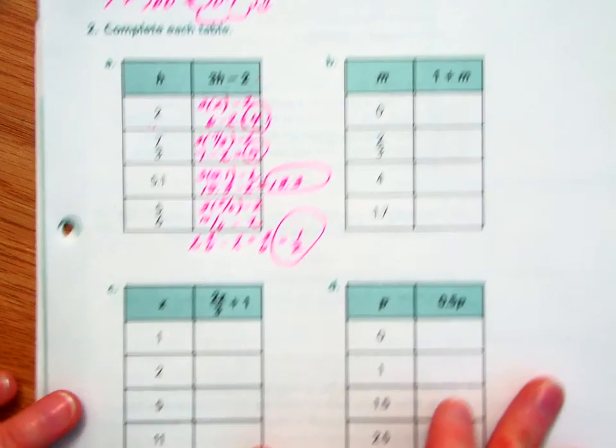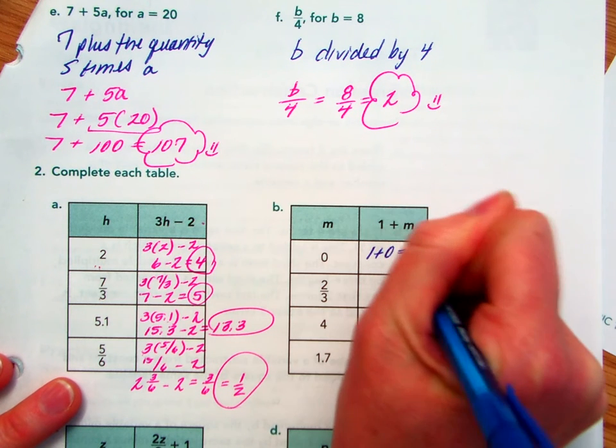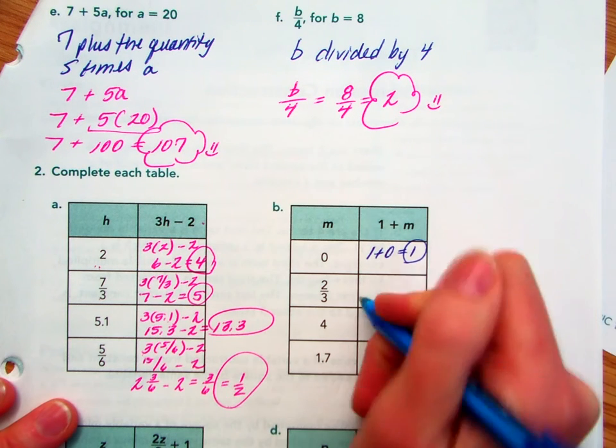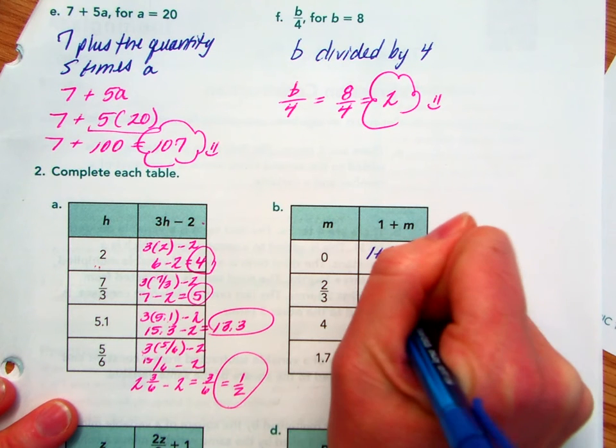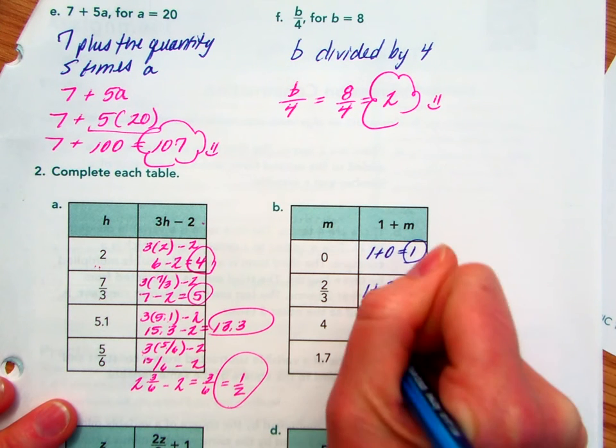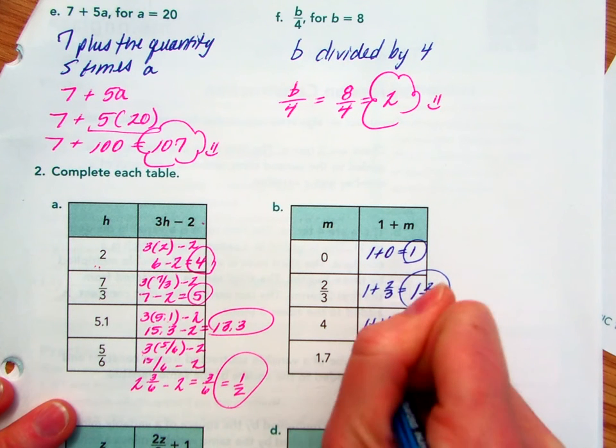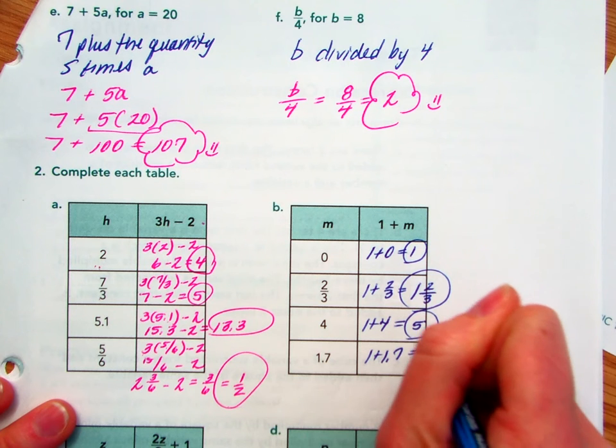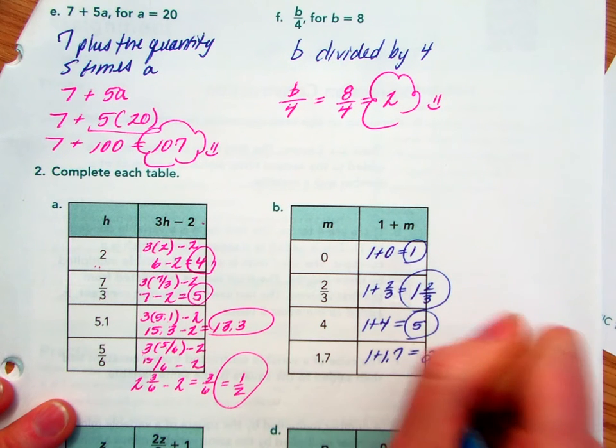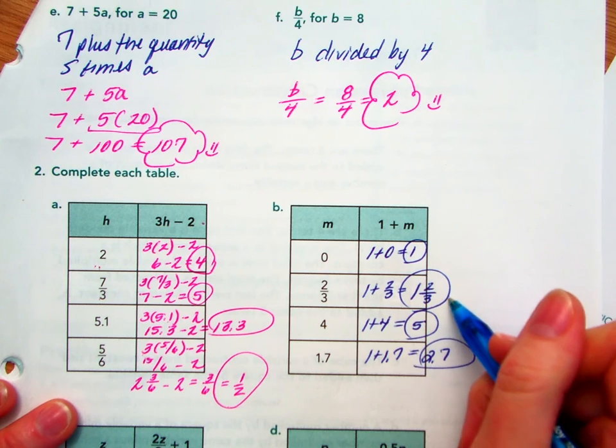Okay, I hope you took a moment to try those out. I'm going to move on to part B. 1 plus 0 equals 1. And 1 plus 2 thirds equals 1 and 2 thirds. 1 plus 4 equals 5. And 1 plus 1 and 7 tenths equals 2 and 7 tenths. The answer key also called this one 5 thirds. Next.